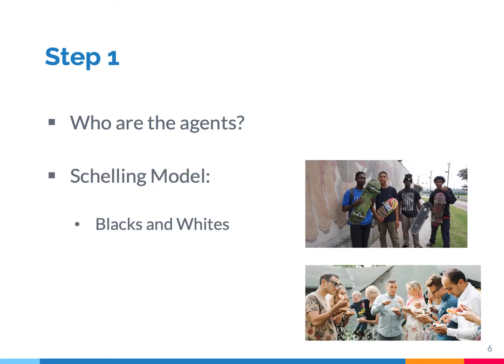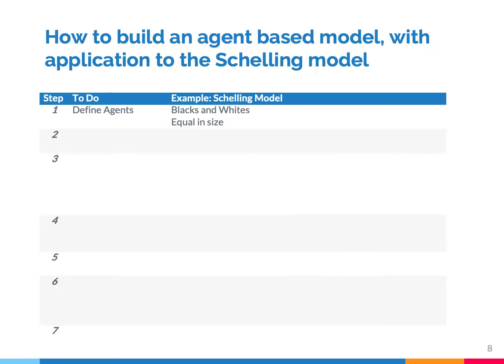In the Schelling model, the agents are blacks and whites, and it is assumed that these two groups are equal in size. Now, reality is of course more difficult and more complex, but if you want to make a model, it's helpful to start very simple.